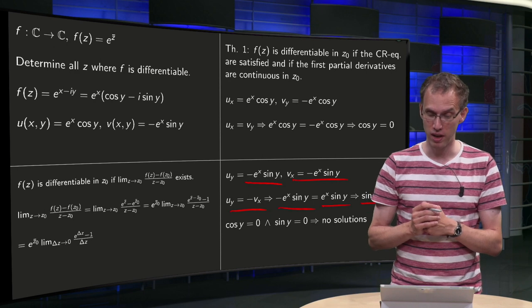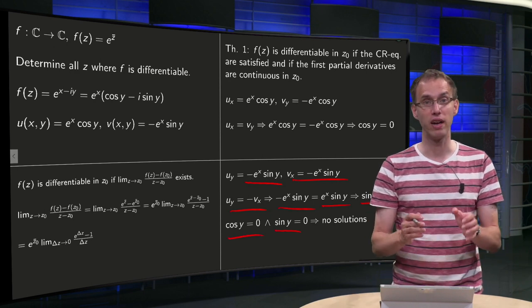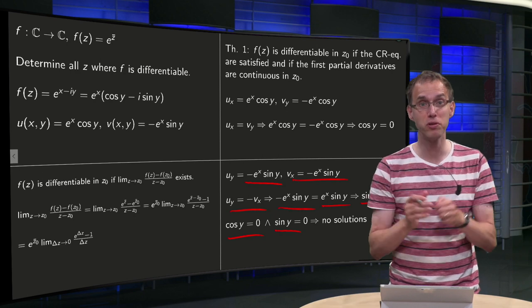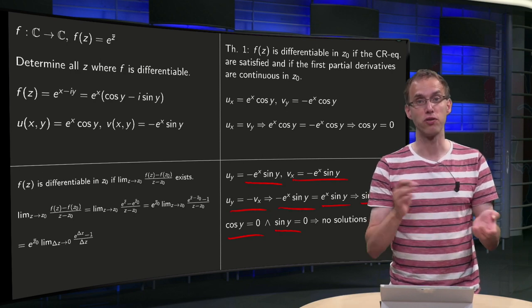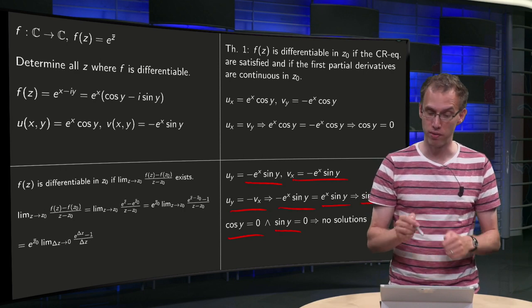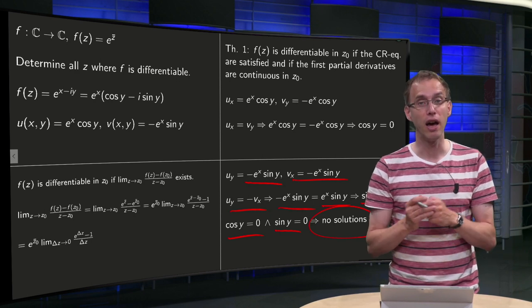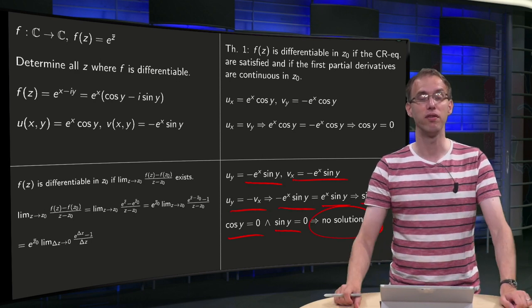So, sin y equals zero and also cos y equals zero, they need to hold both. But you know cos² y + sin² y equals one, so they can never be both equal to zero, so we have no solutions over here, so that means that f(z) is nowhere differentiable.